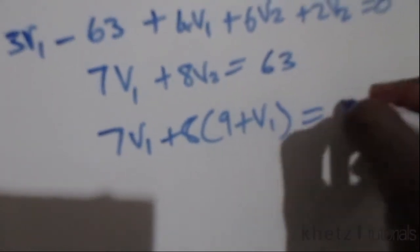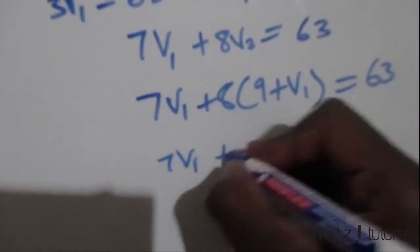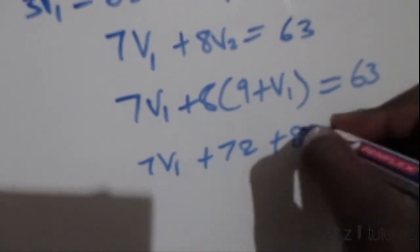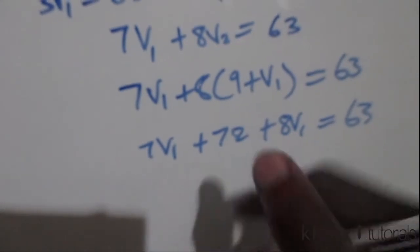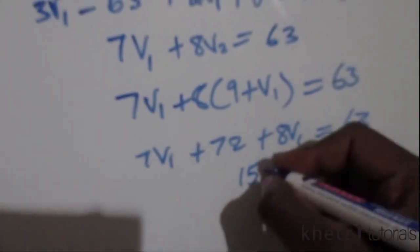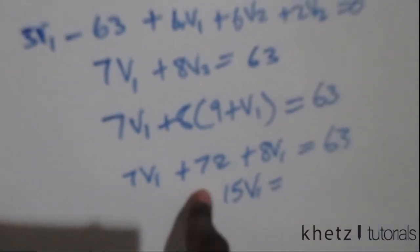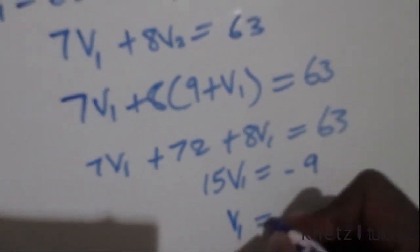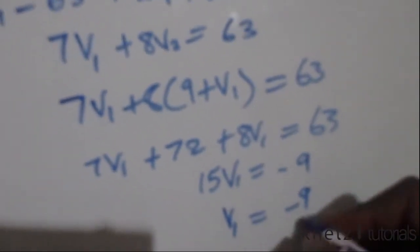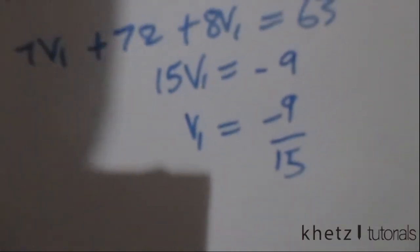We're going to have 7v1 plus 72 plus 8v1 equals 63. Adding these two we're going to have 15v1 equals 63 minus 72, which is negative 9. So v1 equals negative 9 over 15.